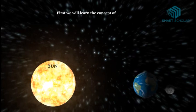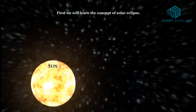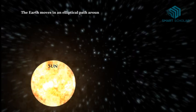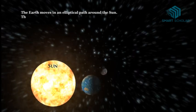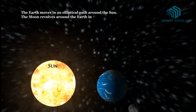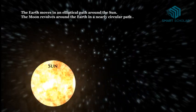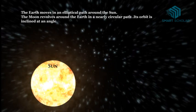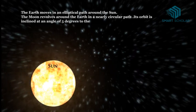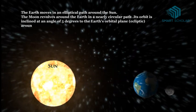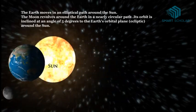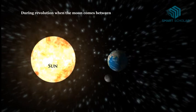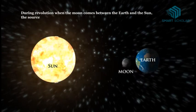First we will learn the concept of solar eclipse. The earth moves in an elliptical path around the Sun. The moon revolves around the earth in a nearly circular path. Its orbit is inclined at an angle of five degrees to the earth's orbital plane around the Sun. During revolution, when the moon comes between the earth and the Sun, the source of light from the Sun is partially or completely blocked.